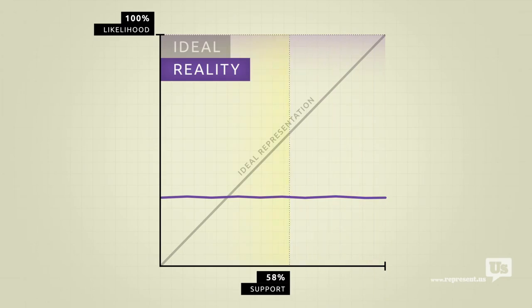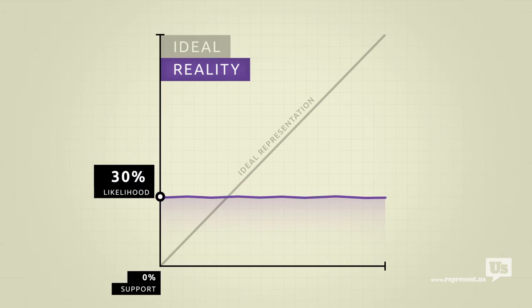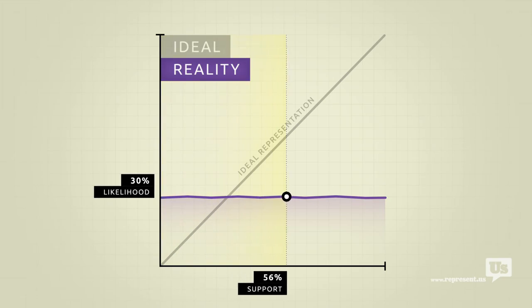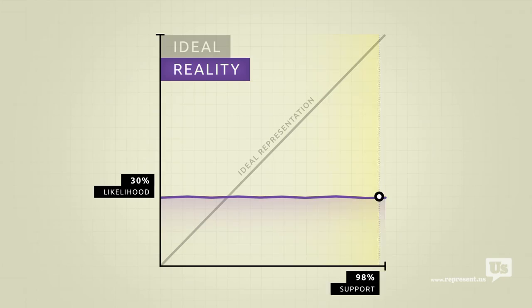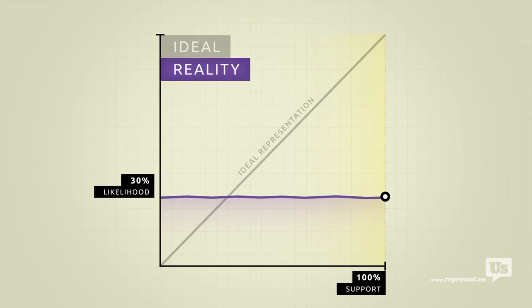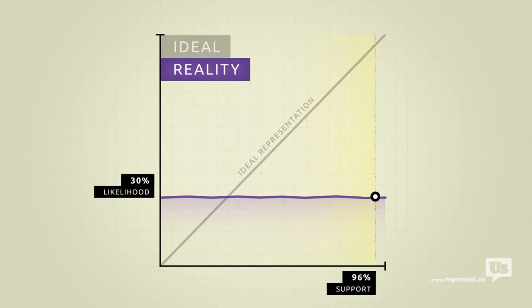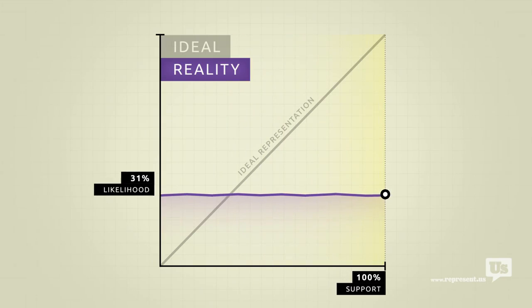Take an idea that nobody supports. Literally nobody. And it has about a 30% chance of becoming federal law. Now take an incredibly popular idea. The most popular idea this country has ever seen. And there's also about a 30% chance of it becoming law. This means that the number of American voters for or against any idea has no impact on the likelihood that Congress will make it law.